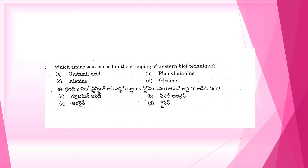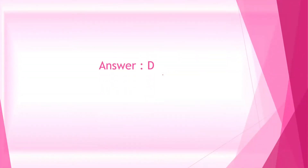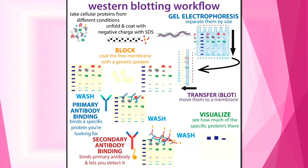Another memory based question. In western blotting technique, we use this amino acid. The correct option is D, that is Glycine. In western blotting technique, we talk about protein-protein interactions.